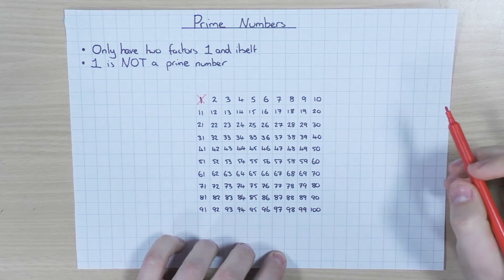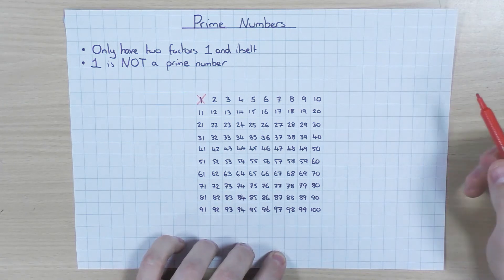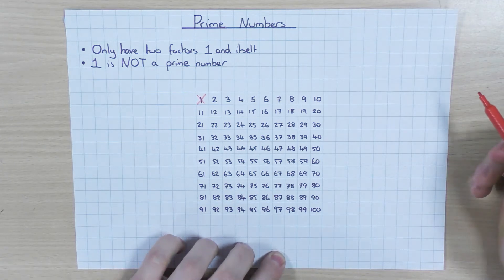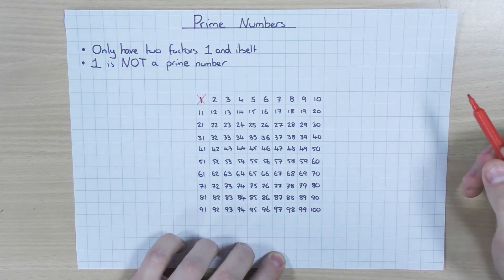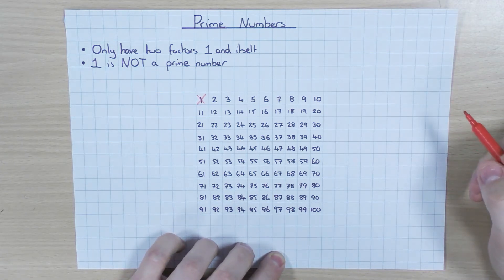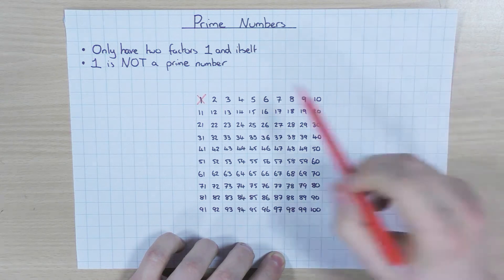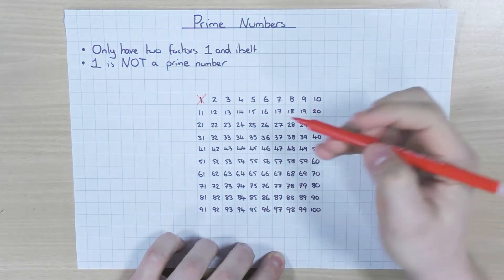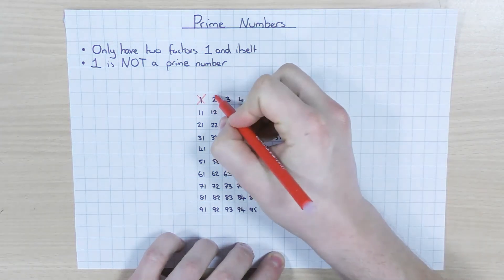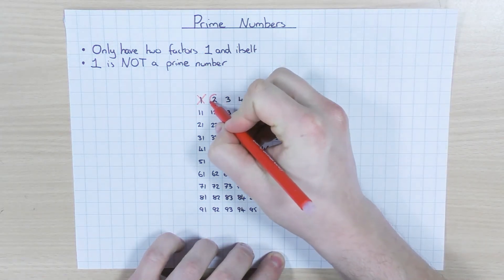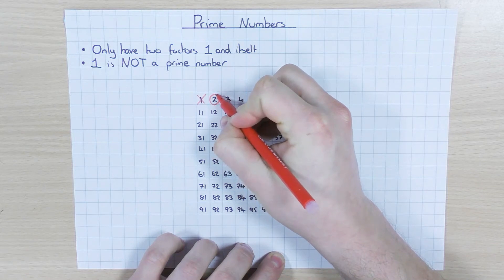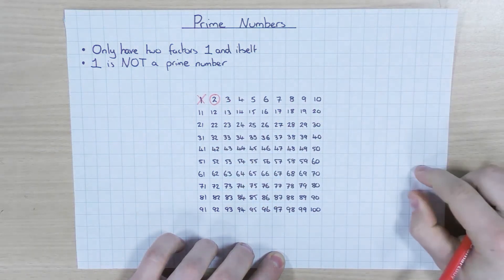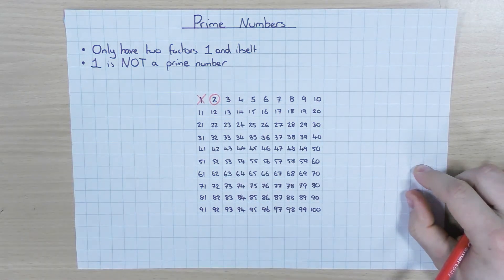Let's have a look at number 2. Number 2 is prime, and it's the only even prime number. The only factors that 2 has is 1 and 2 — so 1 and itself. So 2 is a prime number, and as I say, it's the only even one.